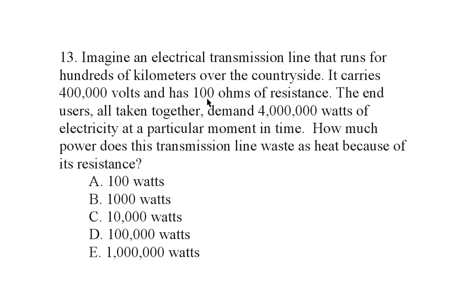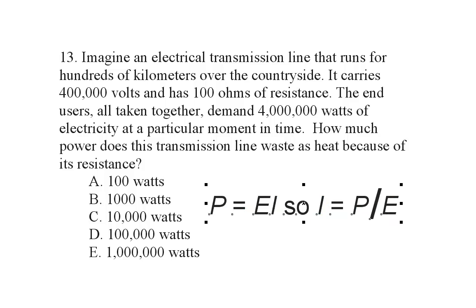In order to figure that out, we need to know the current in this transmission line. We can go back to page 186, where you will find the formula: power equals voltage times current. Power in watts equals voltage in volts times current in amperes. We can rearrange that formula to say the current in amperes equals the power in watts divided by the voltage in volts.